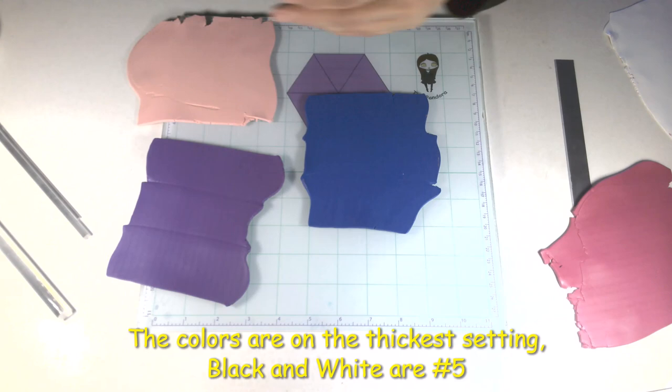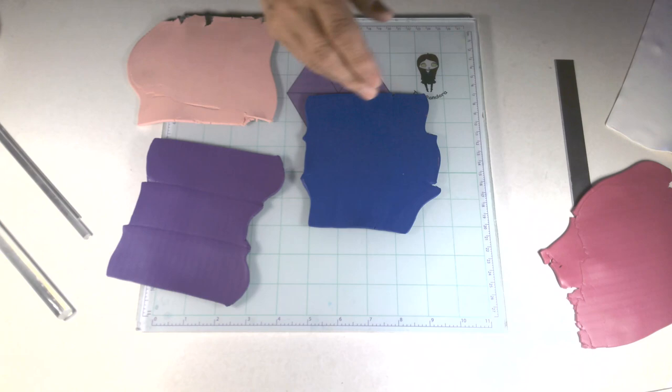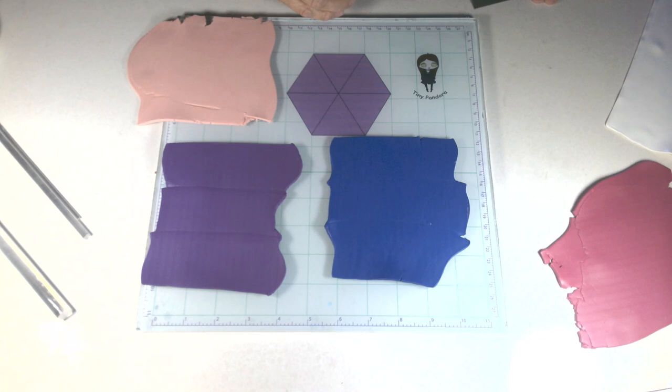I did all these sheets that were color on the thickest setting, and I did the black and the white on number five. I prepared the black because I was thinking of popping some in, and I did on the next cane but not this one.